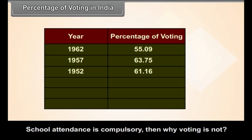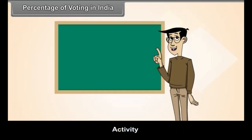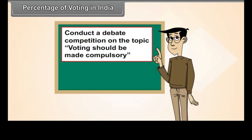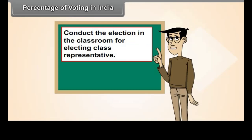School attendance is compulsory — then why is voting not? Activity: Conduct a debate competition on the topic 'Voting should be made compulsory.' Conduct an election in the classroom for electing class representatives.